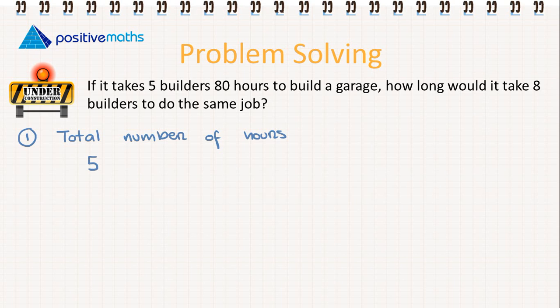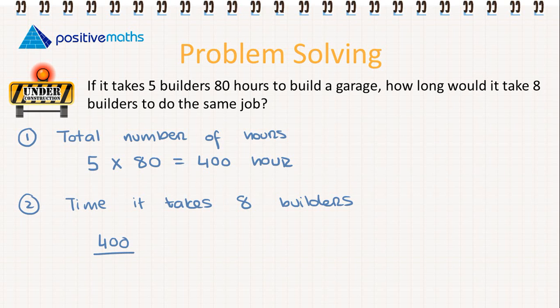How we do this is we multiply. It took 5 builders 80 hours so that means all together it was 400 hours of work. Now we need to figure out how long it will take 8 builders. So the time it takes 8 builders.